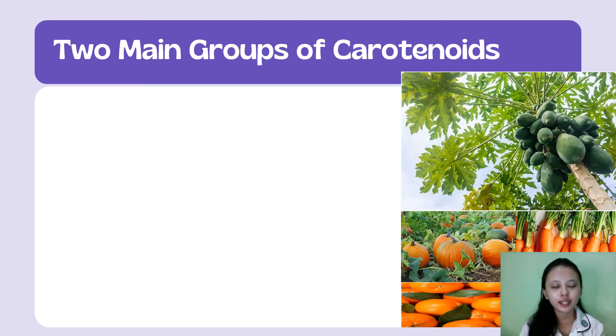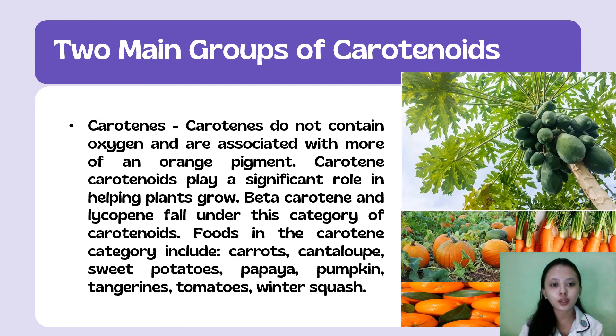The next group is carotenes. Carotenes do not contain oxygen and are associated with more of an orange pigment. Carotene carotenoids play a significant role in helping plants grow. Beta-carotene and lycopene fall under this category. Foods in the carotene category include carrots, cantaloupe, sweet potatoes, papaya, pumpkin, tangerines, tomatoes, and winter squash.